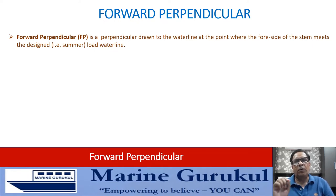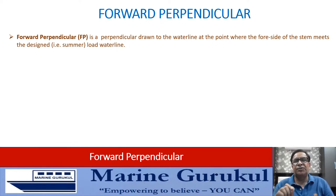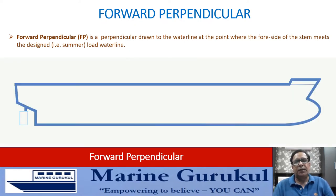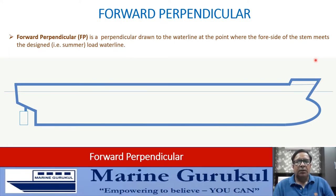The forward perpendicular is a perpendicular drawn to the waterline at a point where the forward side of the stem meets the designed load waterline. The designed load waterline is the waterline at the ship's summer draft. Here is the profile view of the ship — this is the stem, and this is the summer load waterline.